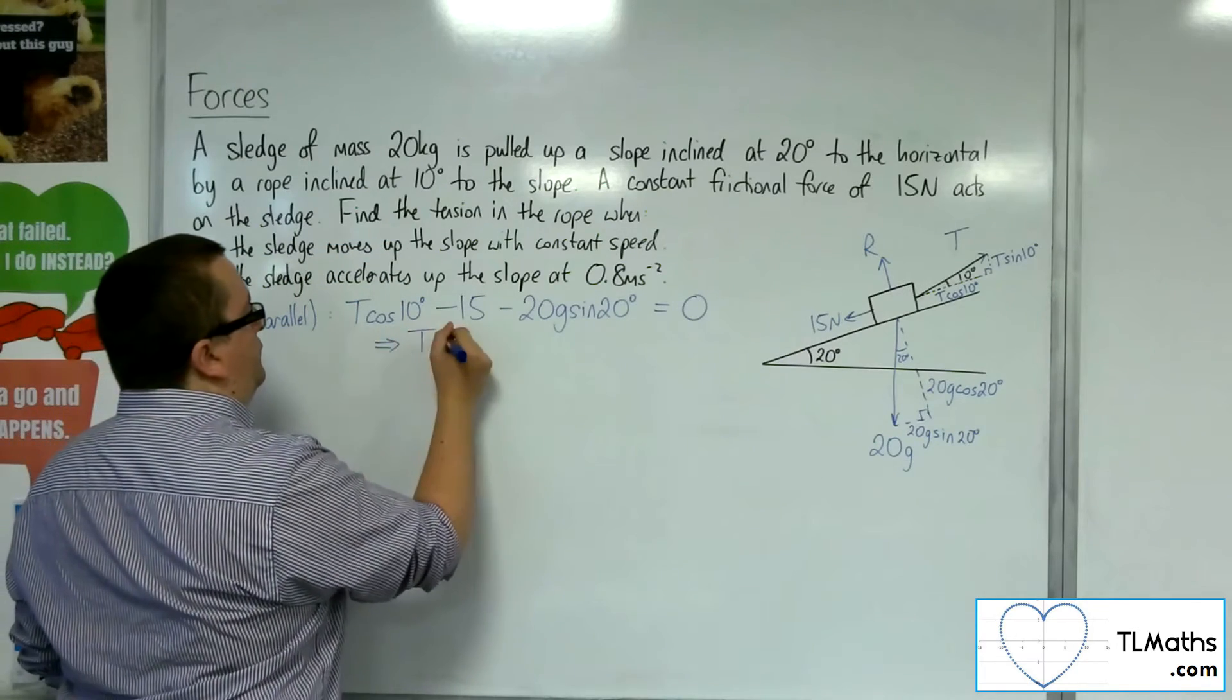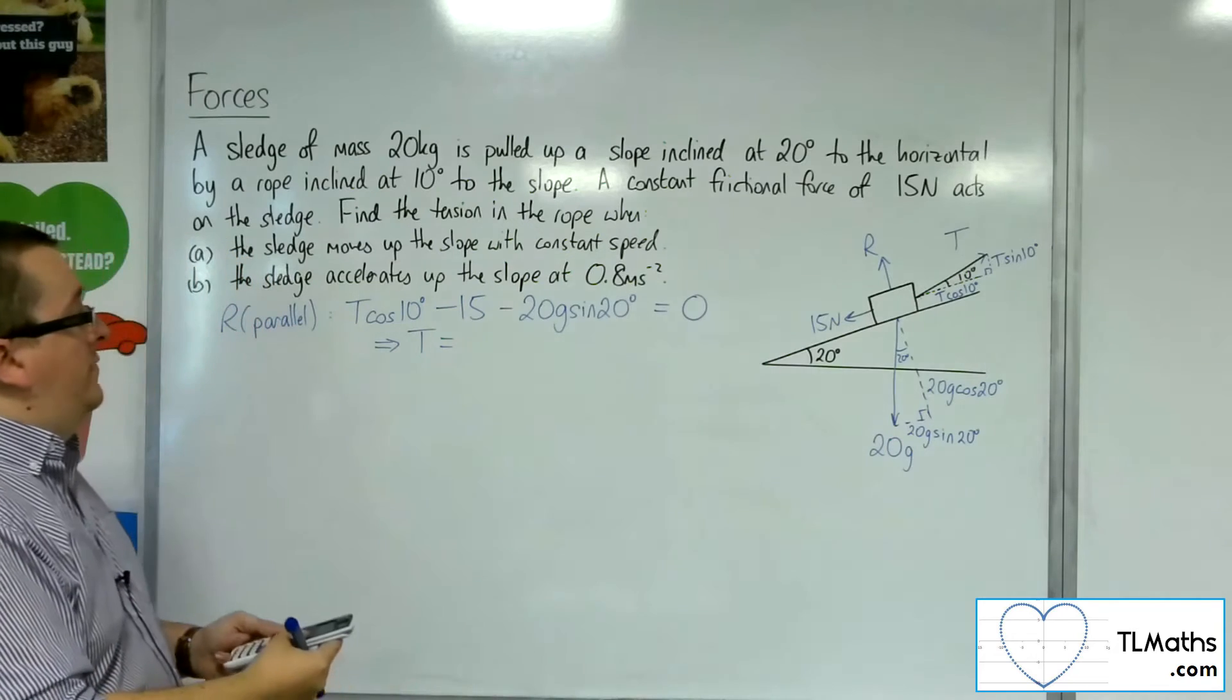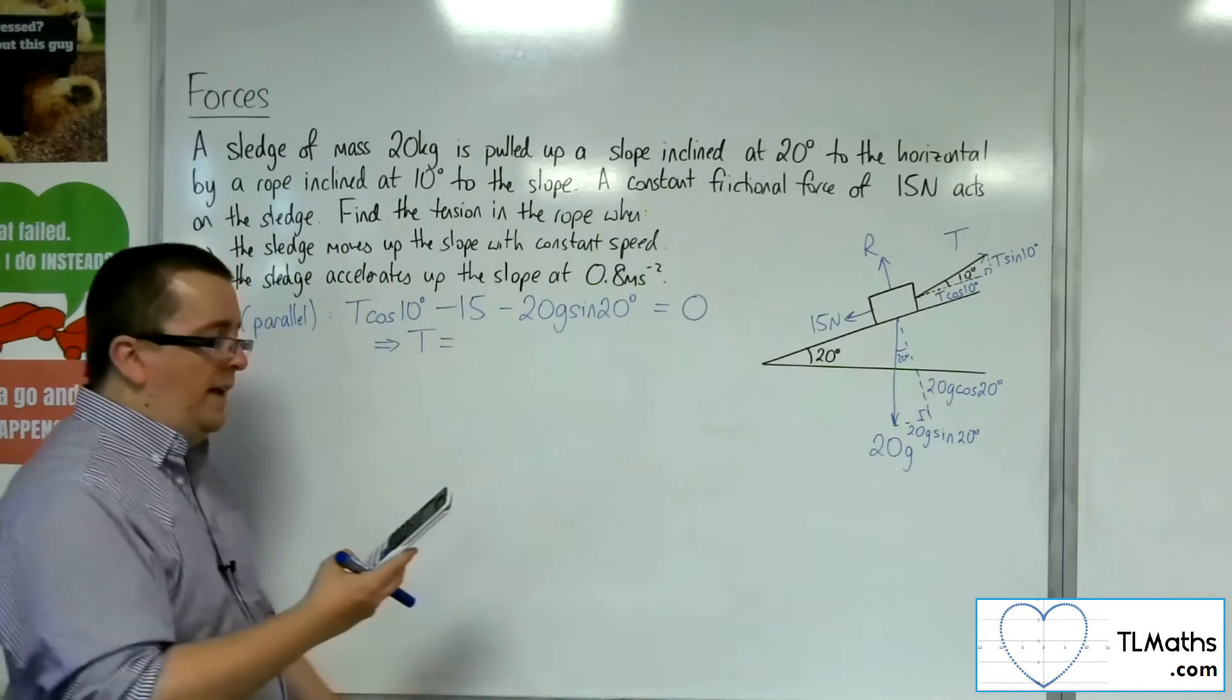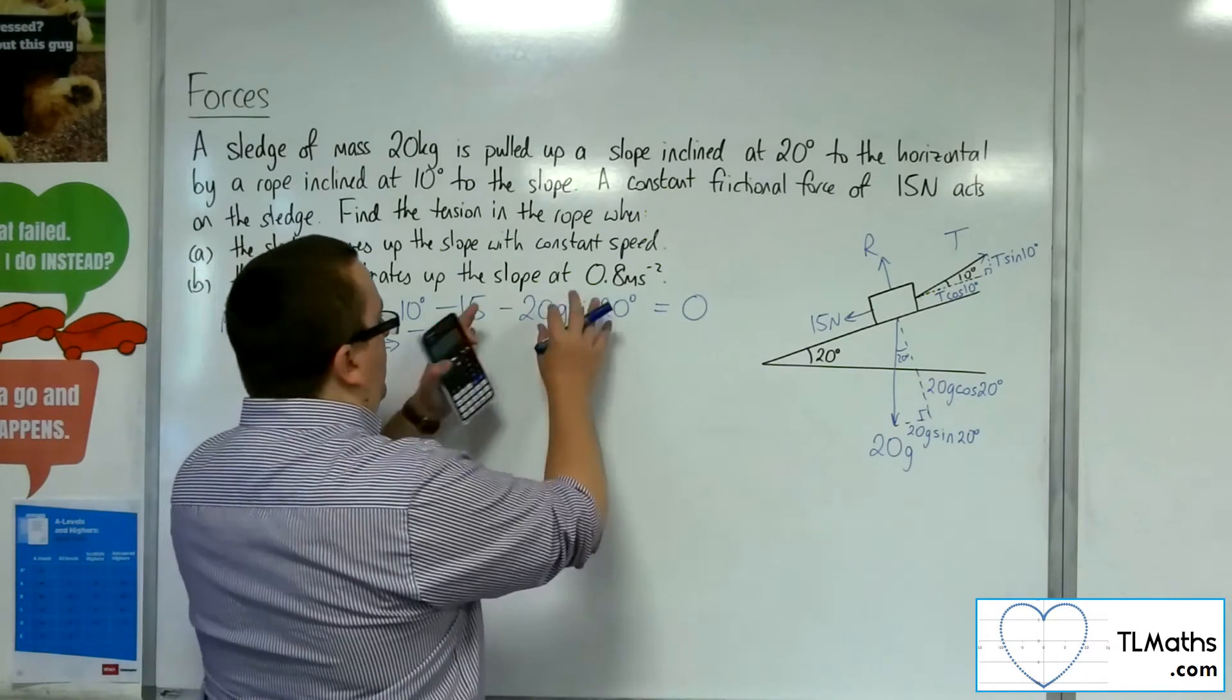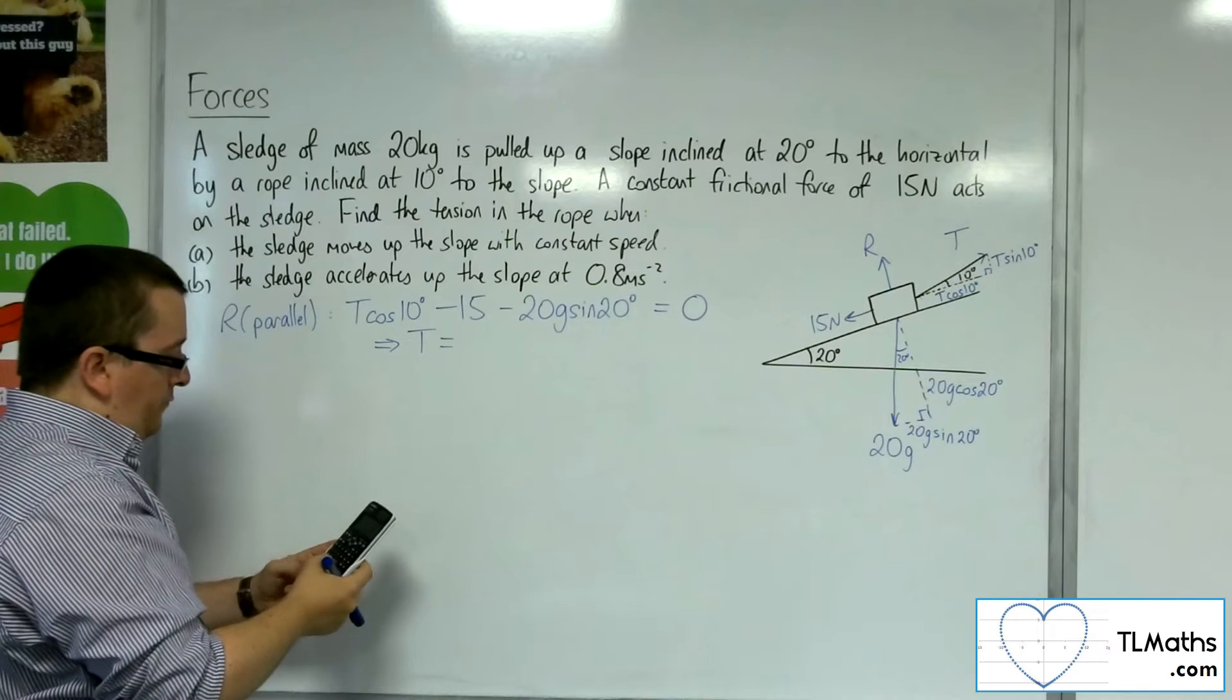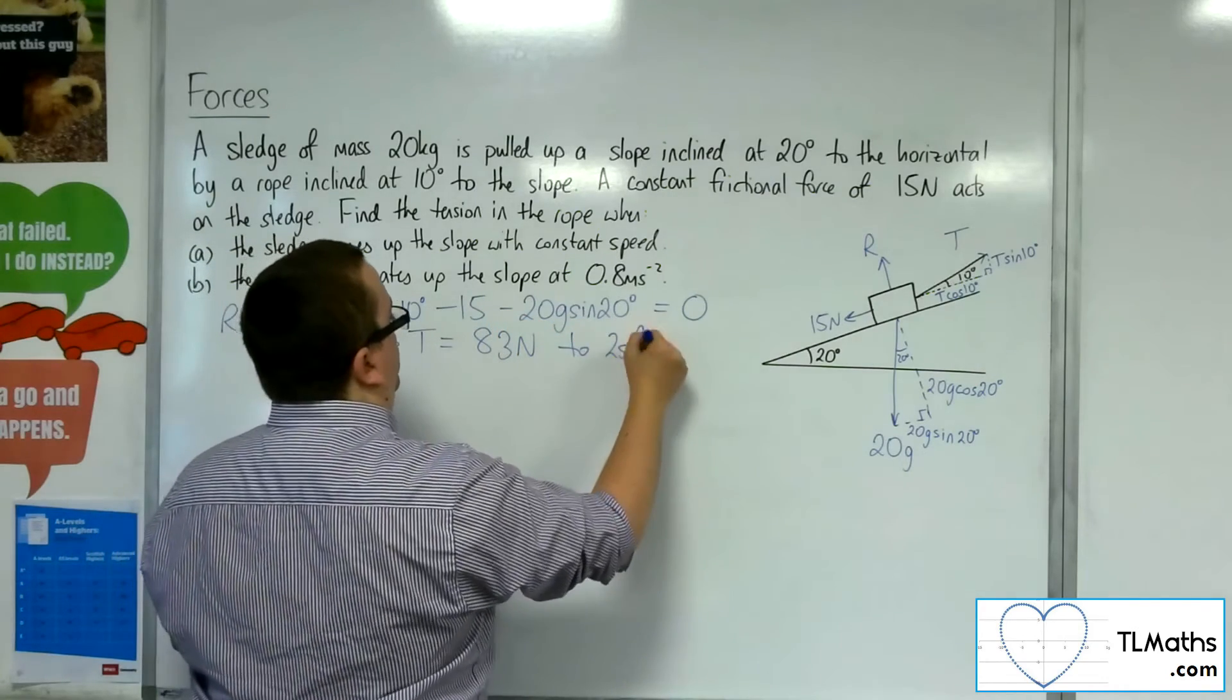So that means that if I add the 15 and the 20g sine 20 to the right-hand side and then divide by cos 10, I will have the tension. So 15 plus 20 lots of 9.8 times sine of 20. So I'm going to take g as 9.8. That gets me 82.0359. That's moving the 15 and the 20g sine 20 over to the right-hand side. Now divide both sides by the cos 10. And I get 83.3. So 83 newtons to two significant figures.